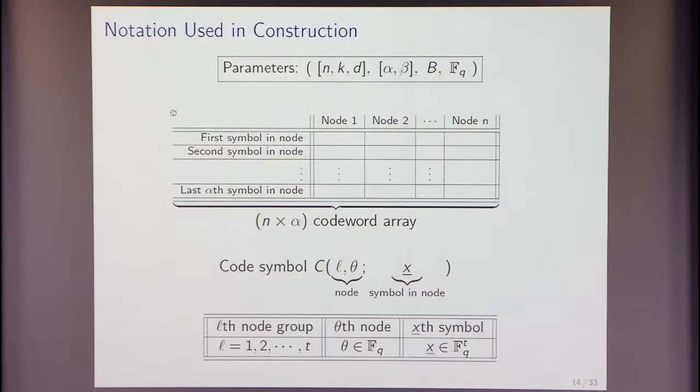Now, the notation that we'll actually use in the construction is that, well, we're going to think of each codeword as an array, which is, these are the nodes, the n nodes of the network. And each of them is going to store alpha symbols. So, this, sorry, it's an alpha by n, not n by alpha, alpha by n codeword array. So, this is the first symbol in the node, second symbol, last alpha symbol, and so on. And I'm going to show a bunch of equations, but only to give the flavor. So, the code in the array will index it in the following way. L and theta will identify the node, and x will identify the particular symbol within the node. L you can think of as identifying a class or a group of nodes, and theta is a particular node within that class. And so, lth, you talk about the lth node group, the theta-th node, and the xth symbol. And l varies between 1 and t, theta varies over fq, and x varies over fq to the t.